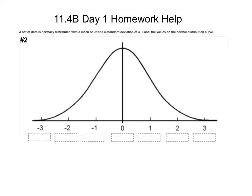Here's number two off of last week's homework. We have a set of data that is normally distributed with a mean of 22 and a standard deviation of 4. Label the values on the normal distribution curve. Anytime we're setting up a normal distribution curve, the mean always goes right in the middle. So if our mean is 22, we put 22 right in the middle. Then if the standard deviation is 4, to get one standard deviation above the mean, you just add on 4. So 22 plus 4 would be 26.